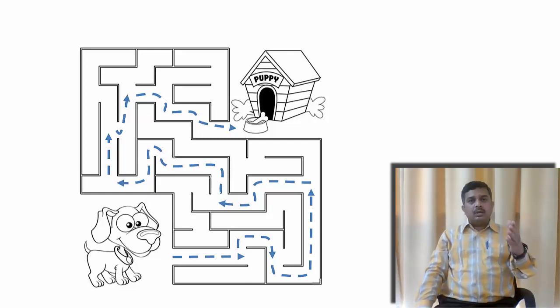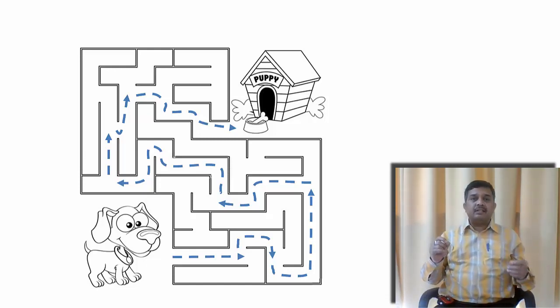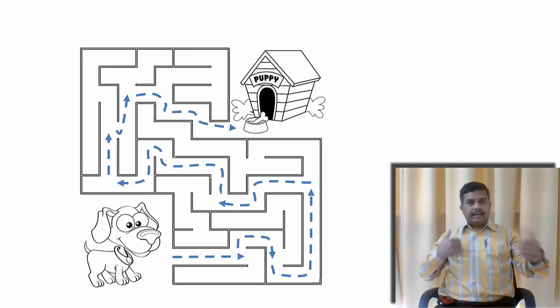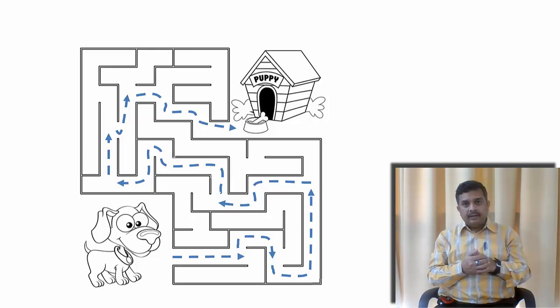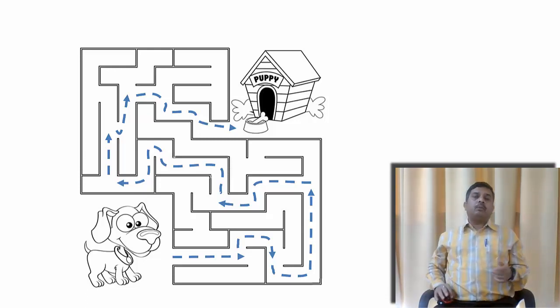Again, this is how we are doing backtracking. We are coming to a location, if that particular path is not leading to the solution, then we will again come back and try to explore some other path. And we will discard that path totally. There is no need of discussing about that route where this path is not leading to the solution. So we will say the formal definition.